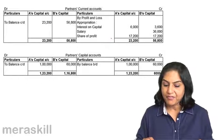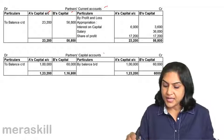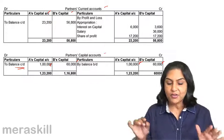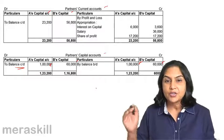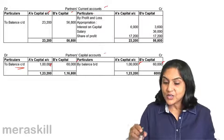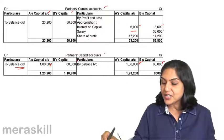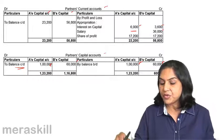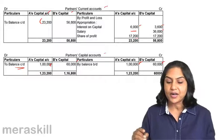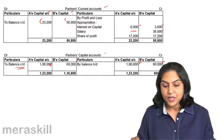Look at this example of partner's current accounts. We'll take the same example of A and B. The partner's capital accounts began with 1 lakh and 60,000 and closes with 1 lakh and 60,000 — balance carried down is also 1 lakh and 60,000. The interest on capital, salary, and share of profits have gone to the partner's current accounts. By profit and loss appropriation account: 6,000 and 3,600. Salary — only B got salary — 36,000 at 3,000 per month. Their share of profit was 17,200 and 17,200. So A has a current account balance of 23,200 and B's current account balance is 56,800.